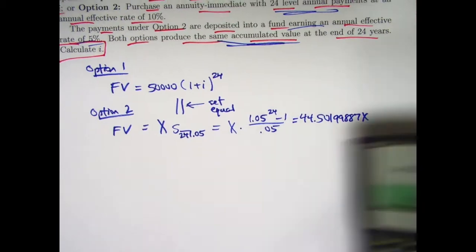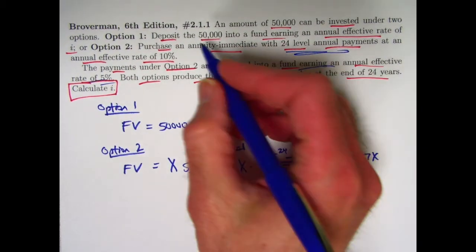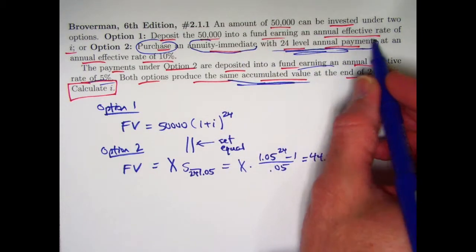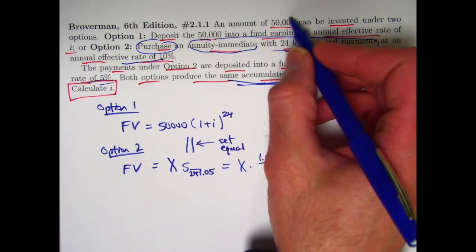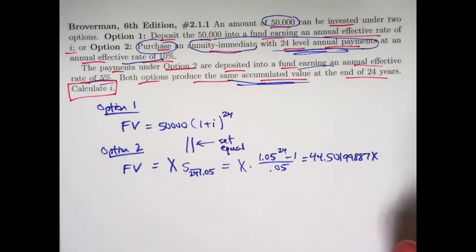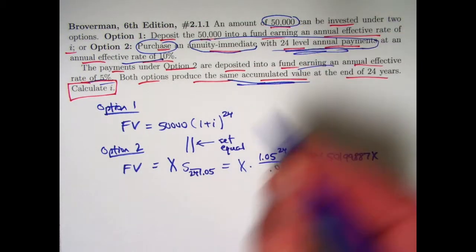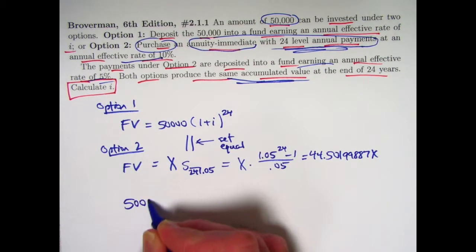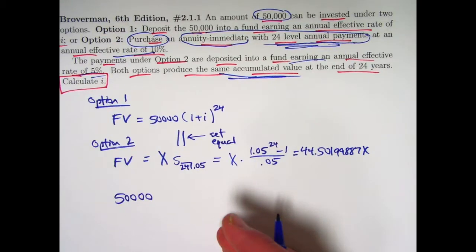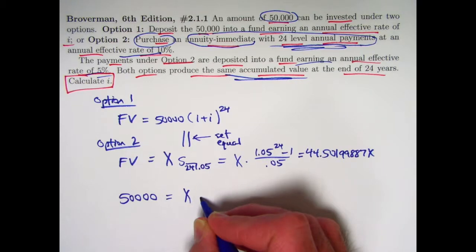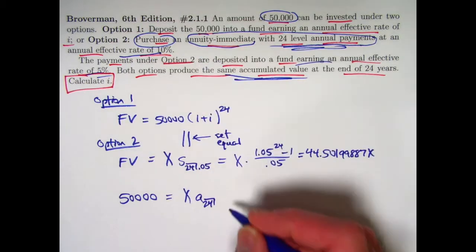Alright. What have we not used yet? How are we going to find X? We have not used the fact that we purchased the annuity immediate with these 24 payments of X at an effective interest rate of 10 with our $50,000. We used that $50,000 to purchase this annuity immediate. So, to help us solve for X, we need to realize that means the $50,000 that we invested at times 0 is the present value of this annuity with payments of X.